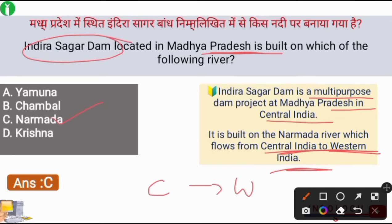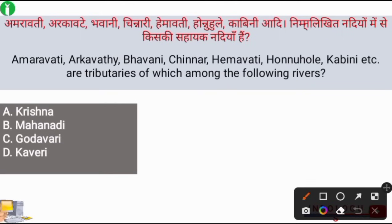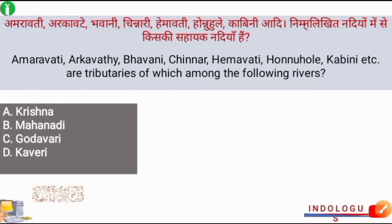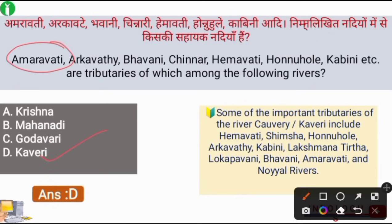Along with the Narmada, the Tapi River also flows towards the west and drains into the Arabian Sea. The next question's right answer is option D, that is the Kaveri River. The tributaries of the Kaveri River include Amravati, Arkavathi, Bhavani, Chanrani, and Hemavathi.